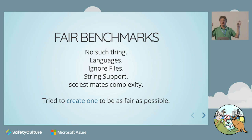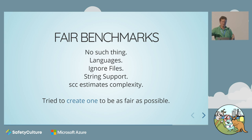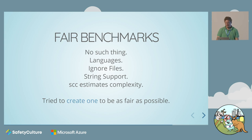Fair benchmarks — there's no such thing. I authored one of the tools so I am biased by default. They all support different languages; some support ignore files, some have string support, some don't; SCC estimates complexity. There's no real way to make a completely fair benchmark. What I tried to do is create nested directories, copy a file into them, run each tool over it, and have them all produce the exact same output. So what we're actually measuring is: how quickly can they find the files, how quickly can they read them from disk, how quickly can they process them, and then how quickly can they sum up the results.